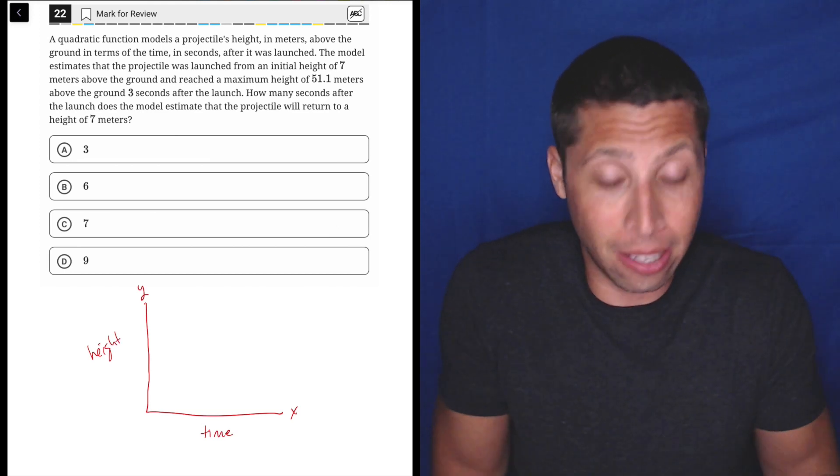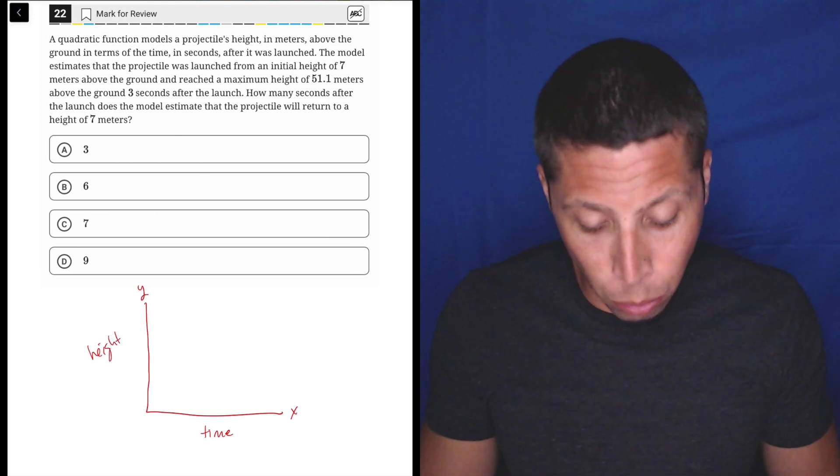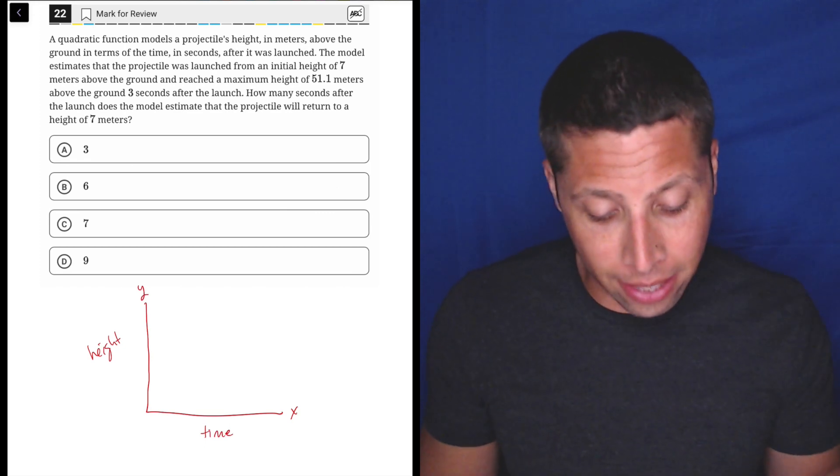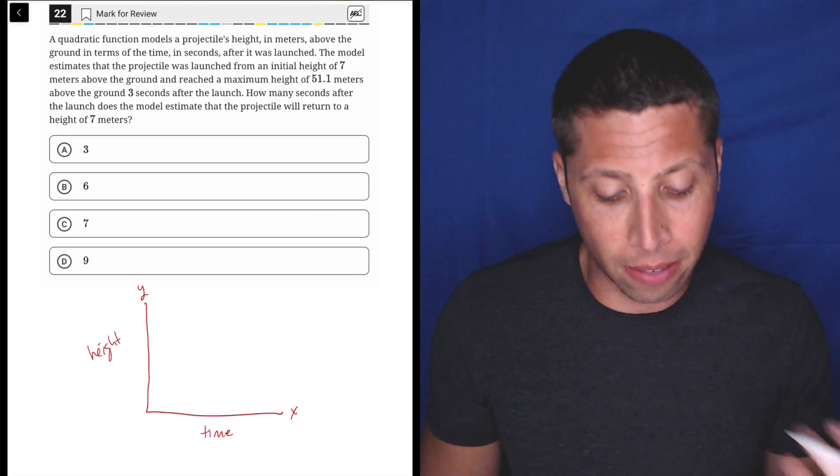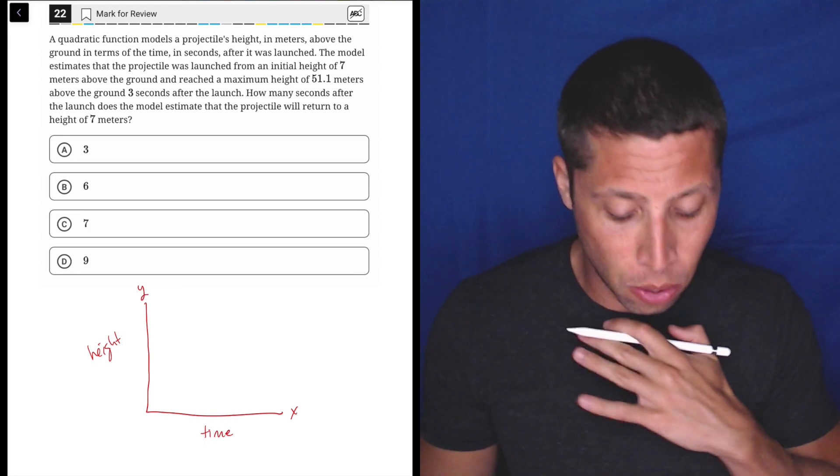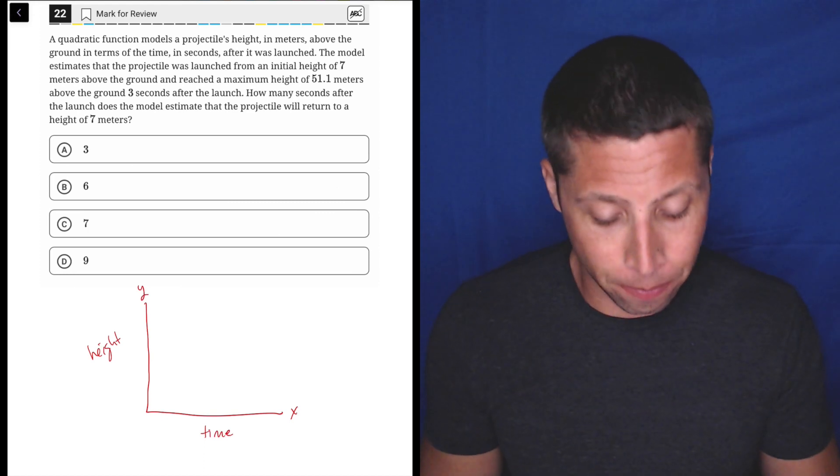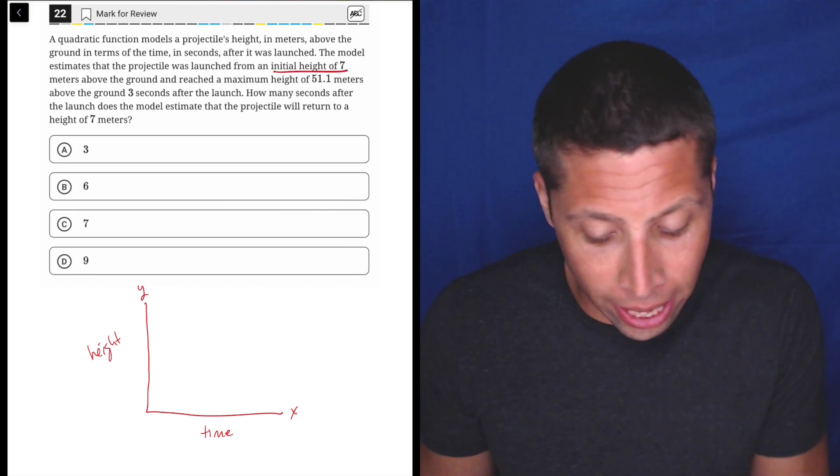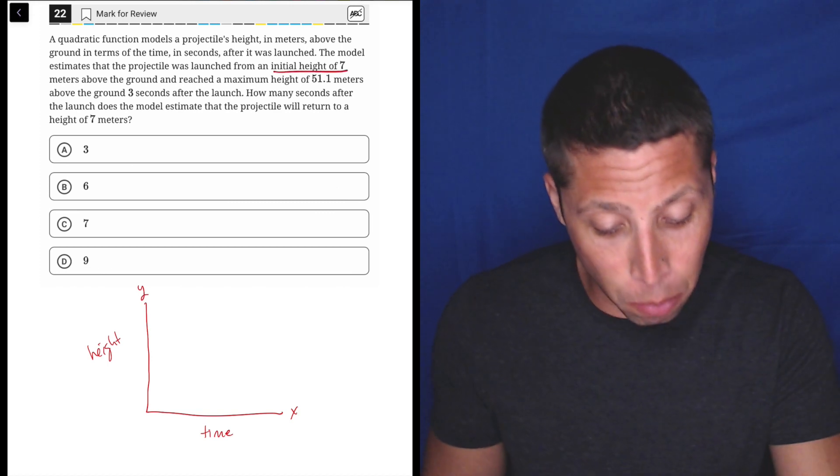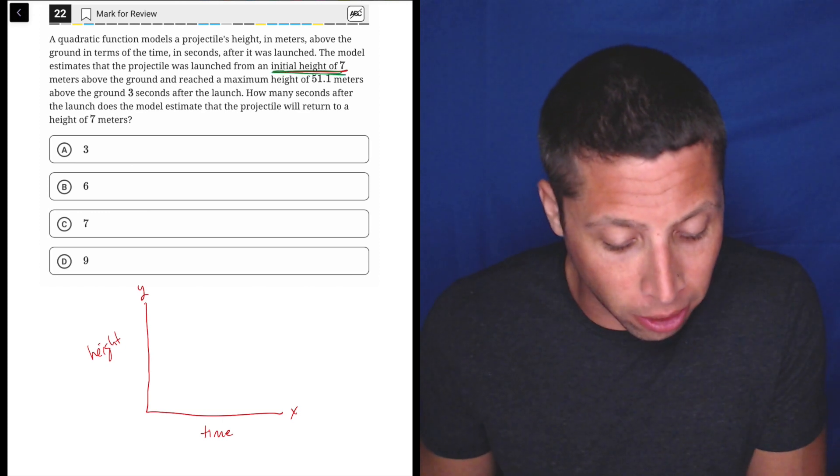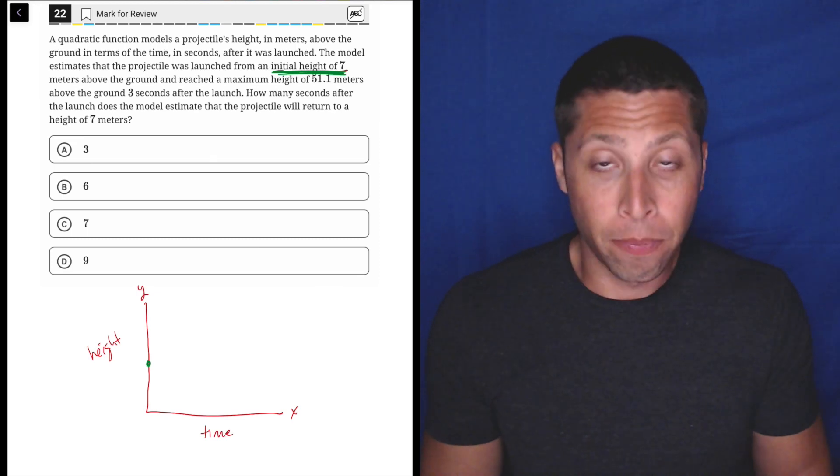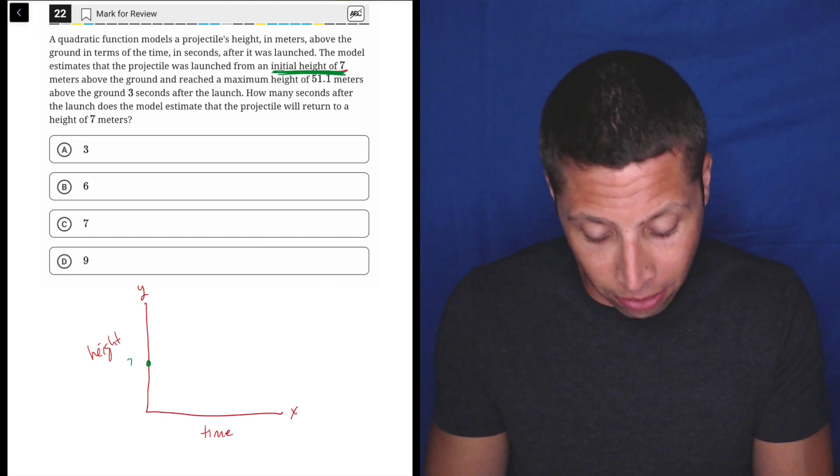So it's got to be just in this quadrant. So what do they tell us? Okay, quadratic function models a projectile's height in meters above the ground in terms of the time in seconds after it's launched. That's just code for X's time, Y's height. The model estimates the projectile was launched from an initial height of seven meters above the ground. So that's a point. Let's actually use different colors here. So initial height of seven means that when time is zero, the height is seven. So this is like a y-intercept.